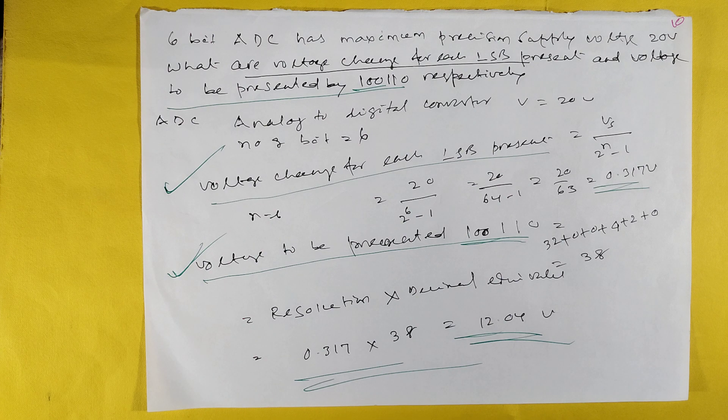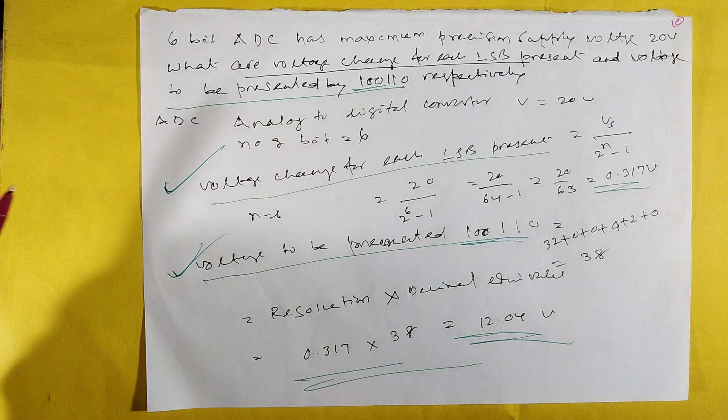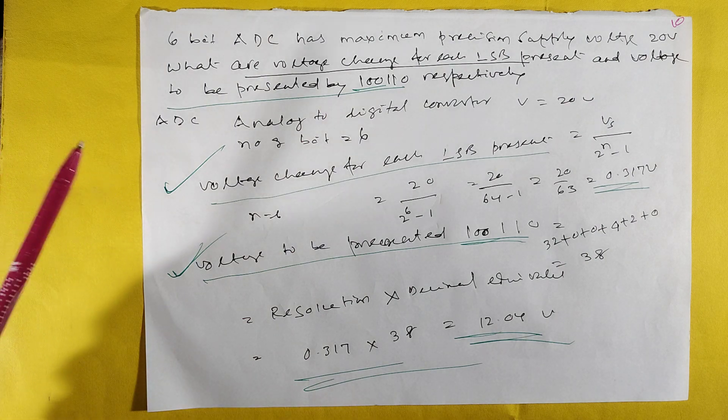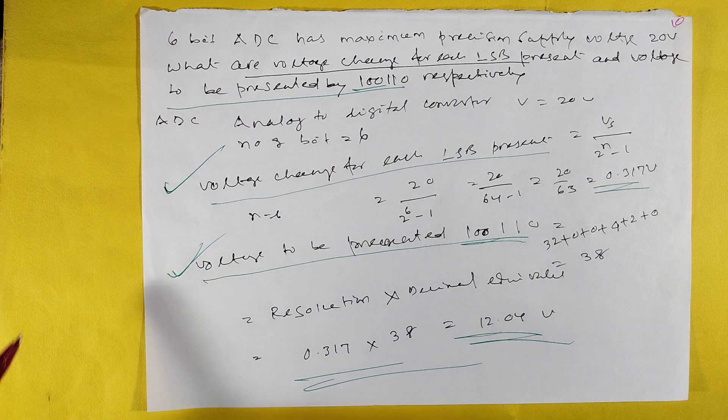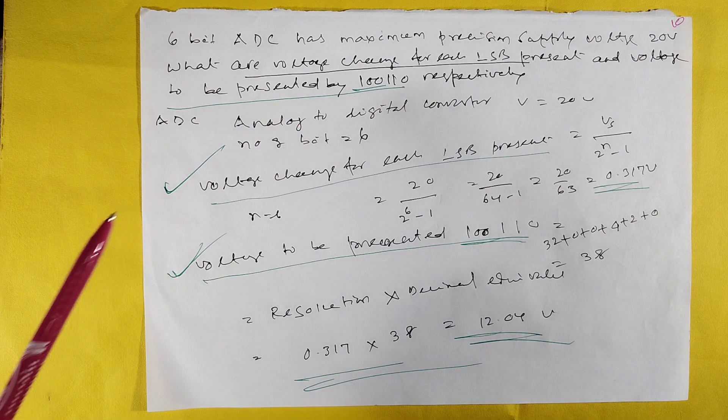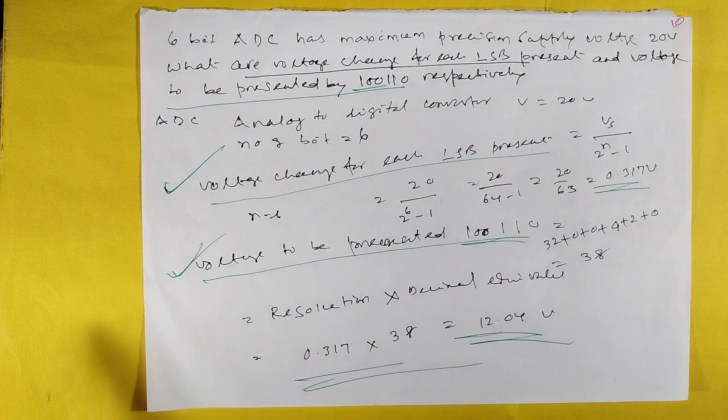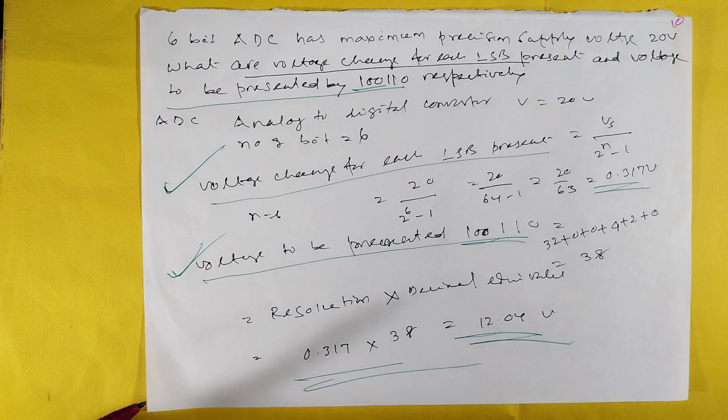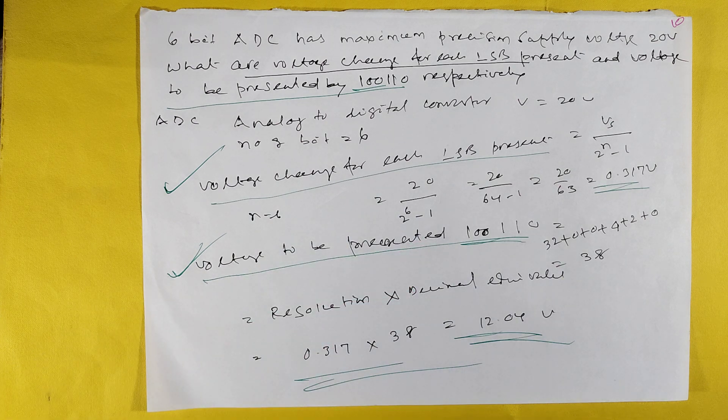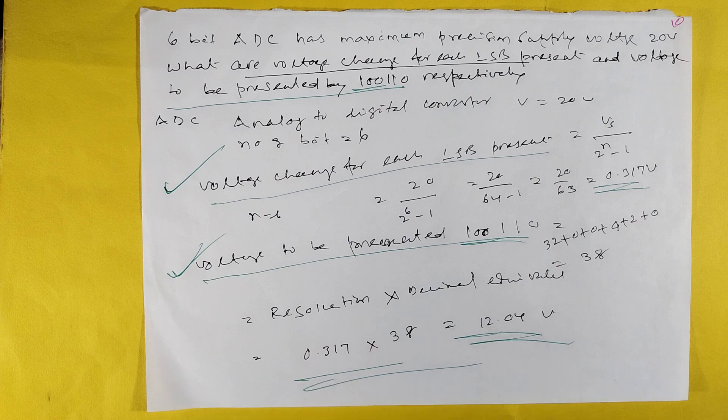A 6-bit analog to digital converter has maximum supply voltage 20V. What is the voltage change for each LSB and voltage represented when signal is 100110? Voltage change per LSB = VS/(2^n - 1). VS = 20V, n = 6, so voltage per LSB = 0.317V. Signal 100110 in decimal is 38. Voltage = 38 × 0.317 = 12.04V.